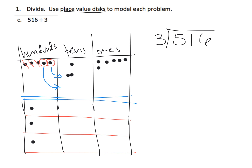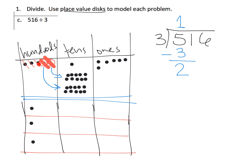We cash in those 2 dots for 10 tens each, placing them in the tens column. Those 2 dots are no longer in the hundreds because they've been cashed in for 10 tens down here — this 100 got cashed in for 10 tens, and this 100 got cashed in for 10 tens. What does that look like in the standard algorithm? We had 5 hundreds and needed to put them into 3 groups, so each group gets 1. We've used up 3 dots, and we have 2 hundreds left over — you can see it in the hundreds column.